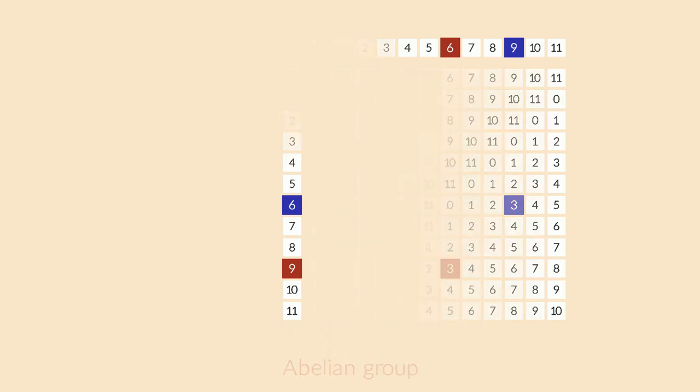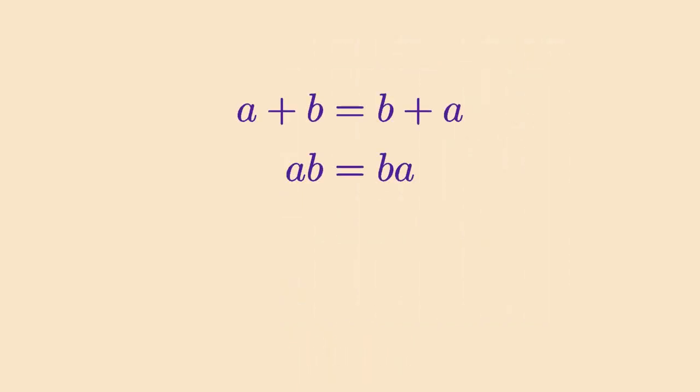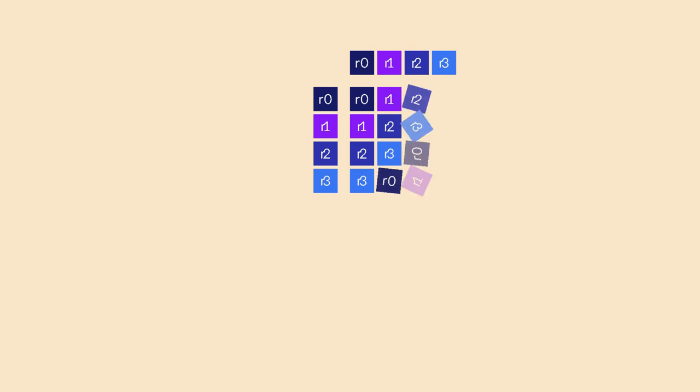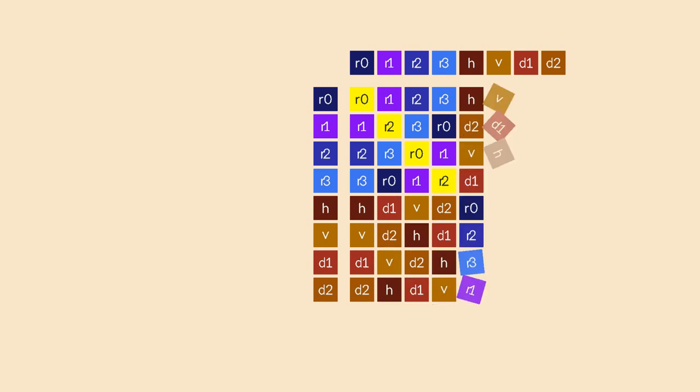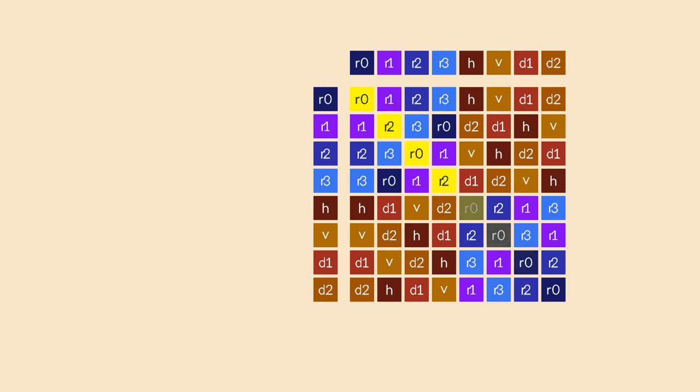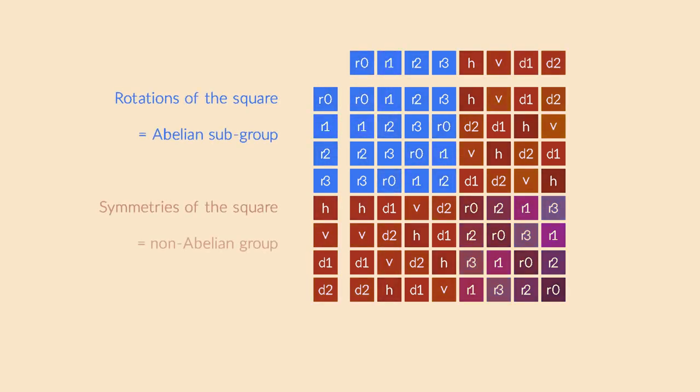In most number systems, addition and multiplication commute, but subtraction and division don't. For the symmetries of the square, the rotations commute, but the group as a whole doesn't. When you combine two reflections in different orders, you may get different results. This example shows that a non-abelian group can have an abelian subgroup.